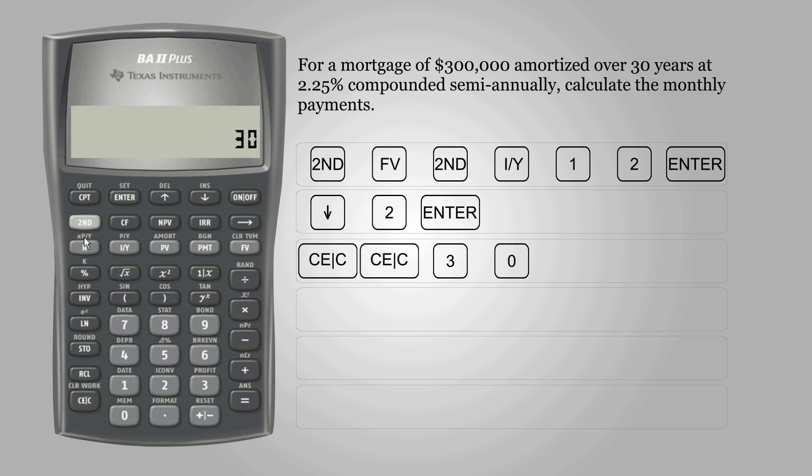and press 2nd N to multiply it by PY value. Press N again to store it in N.